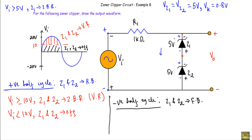What will be the minimum voltage during the negative cycle to put Z1 and Z2 in forward bias? If the input voltage becomes less than -0.8V, Zener diode Z1 enters forward bias, but Z2 will not be in forward bias because it will not get sufficient voltage across its two terminals. Therefore, we have to wait for the input voltage to become at least -1.6V to drive both Z1 and Z2 into forward bias.